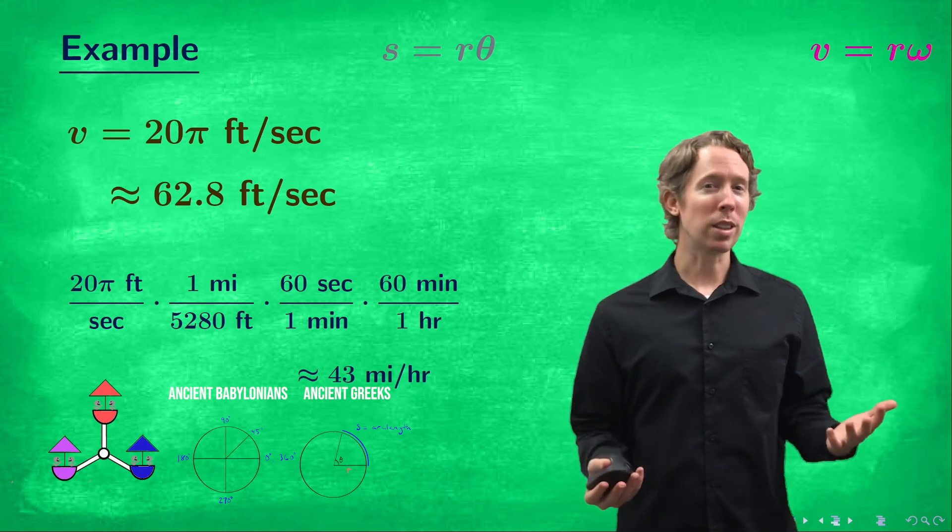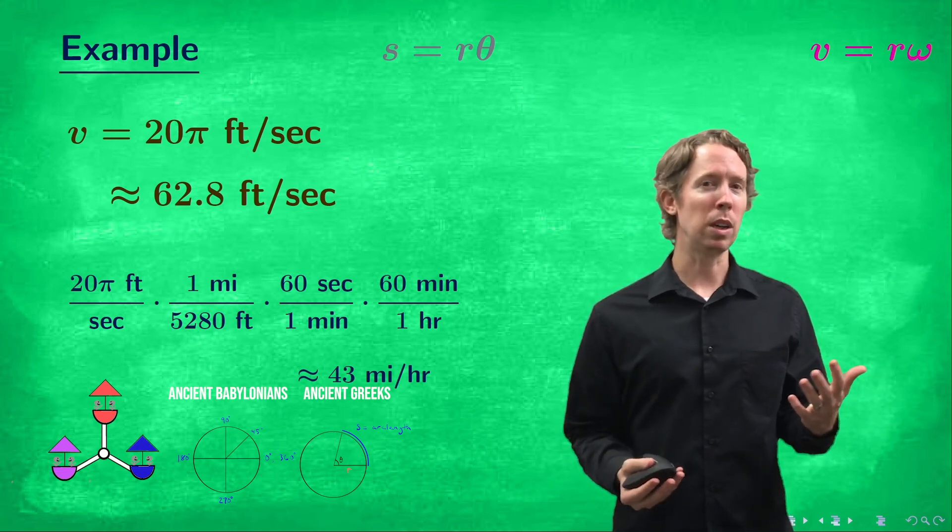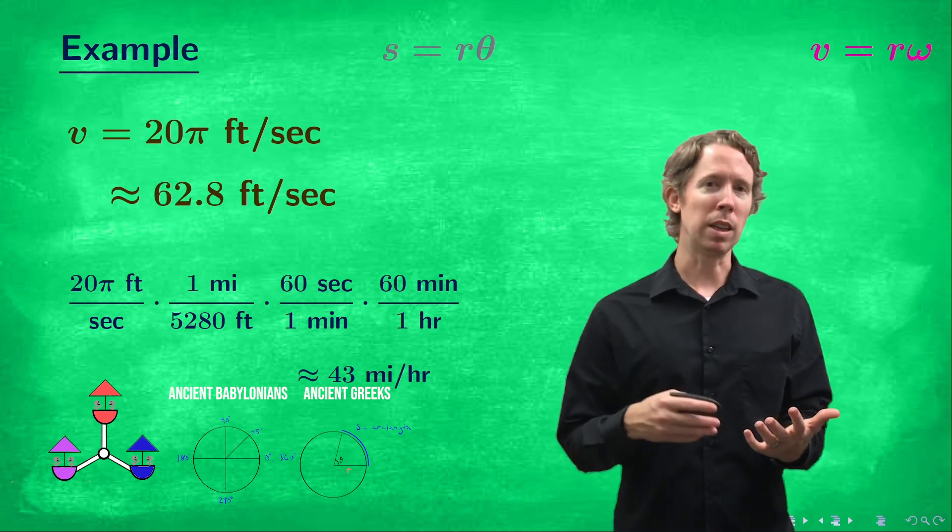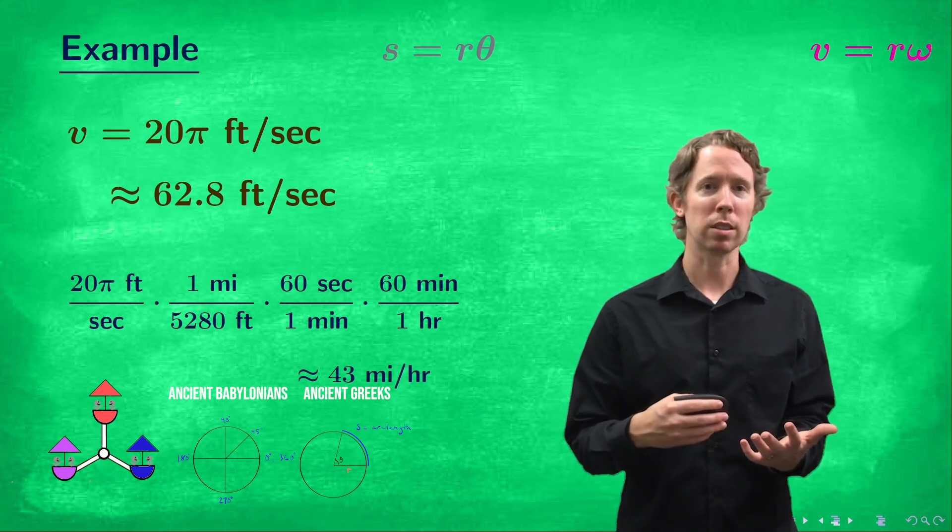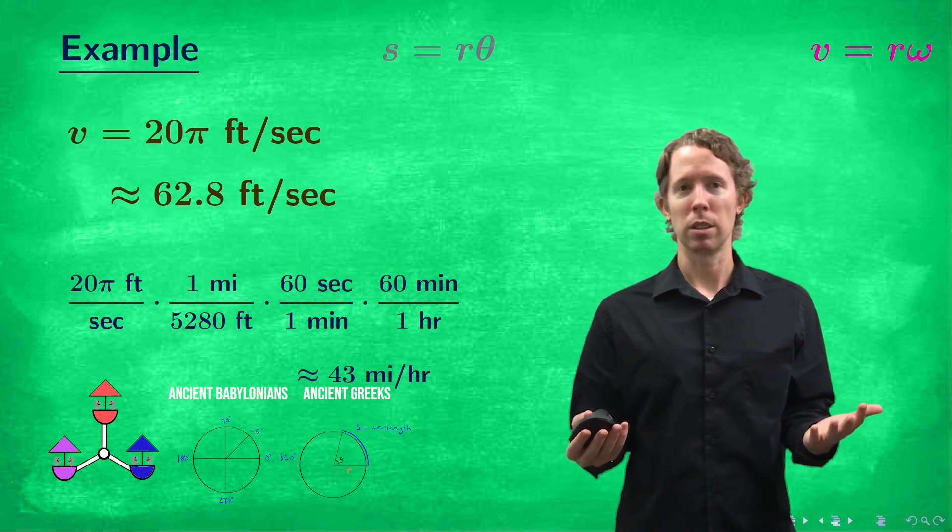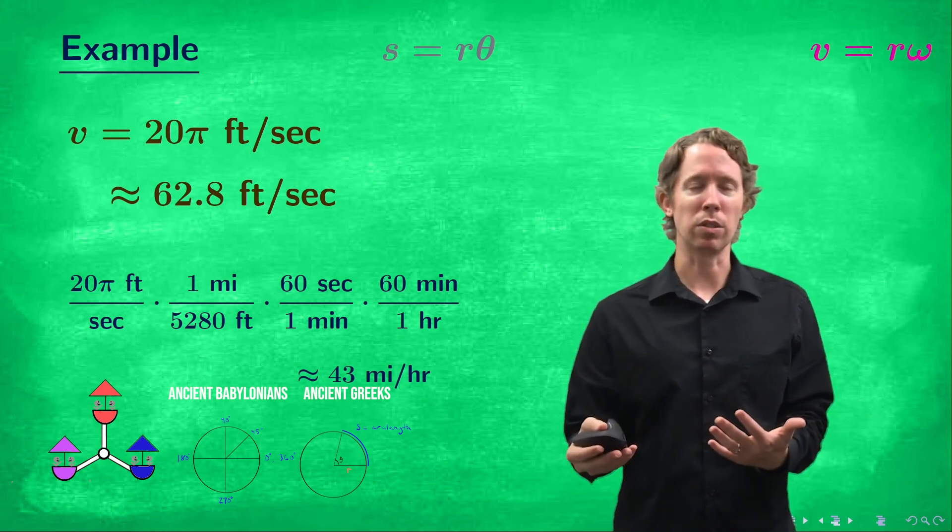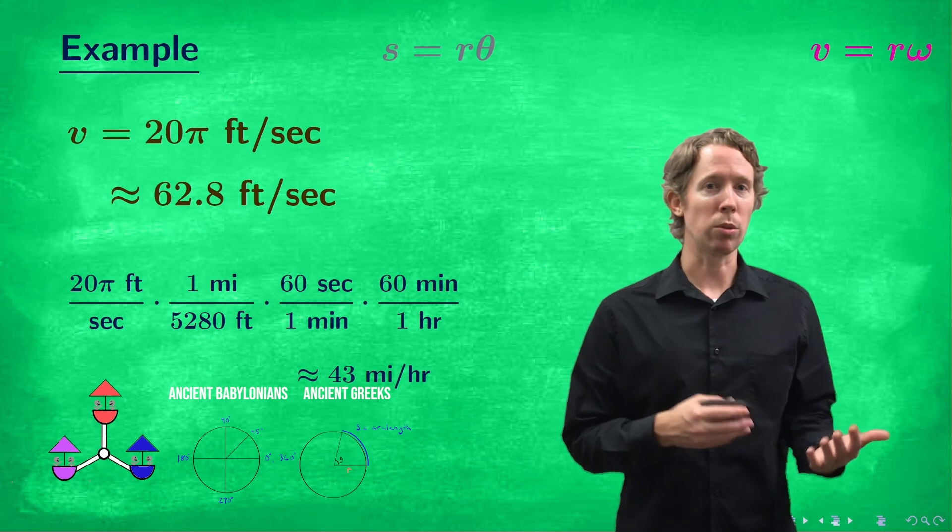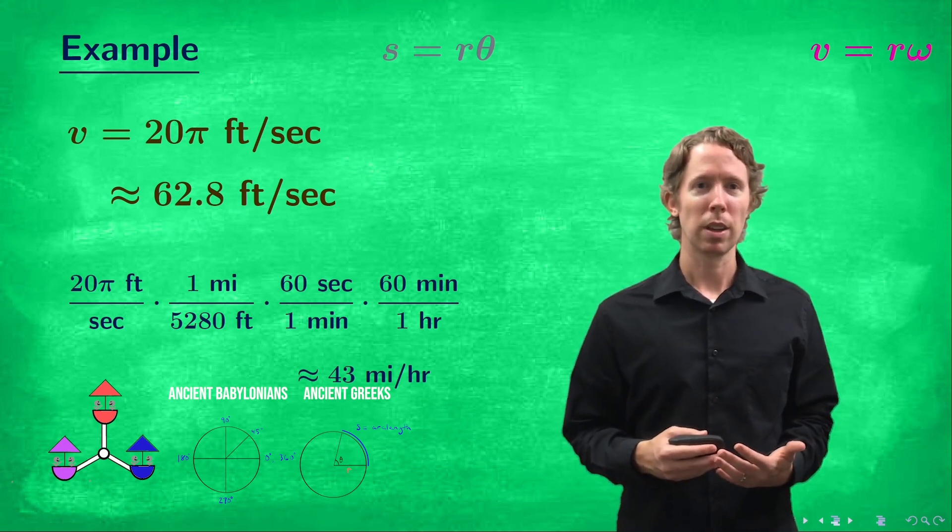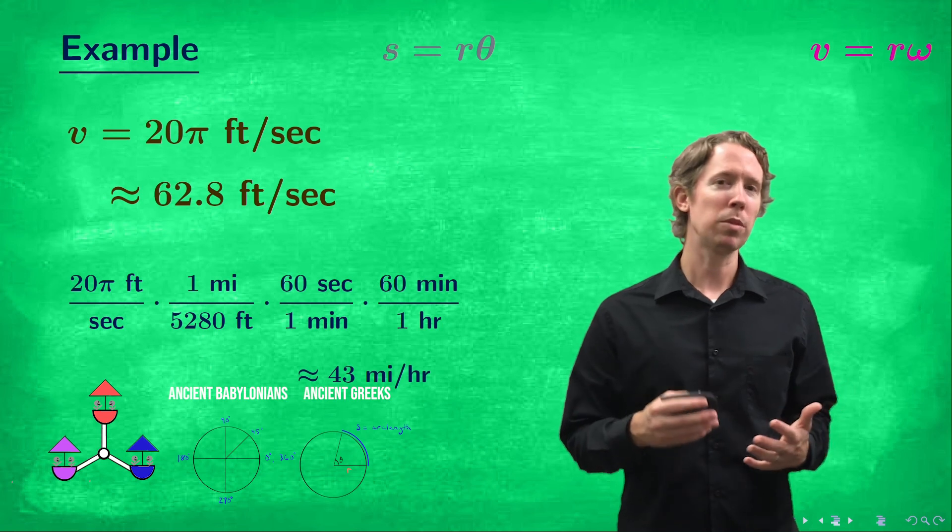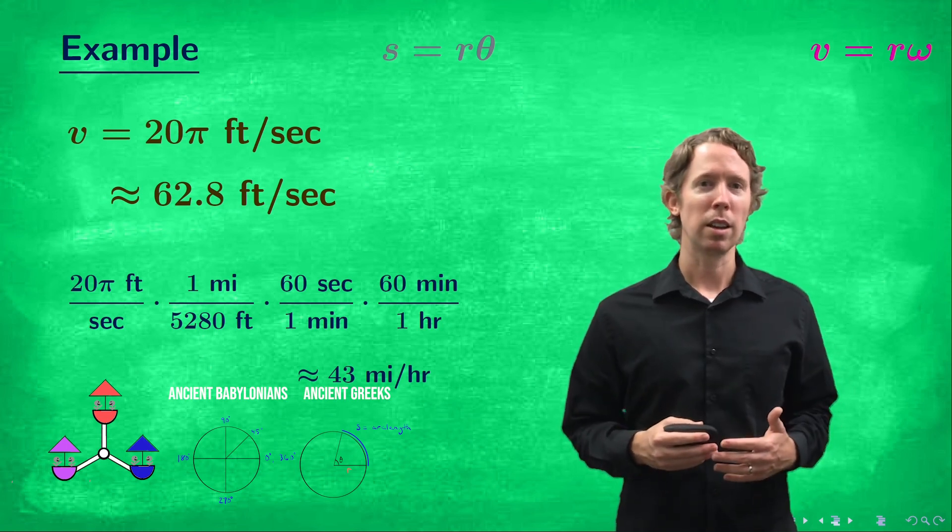It would be interesting to know how this speed would change if at the beginning, instead of saying that the rate of rotation was one rotation for every two seconds, we set it with something else. If we change omega, how does that change v? Or if we change the radius from 20 feet to something else, how would that change the speed? It's not too complicated to think about. So I'll let you think about that. Have a good one.